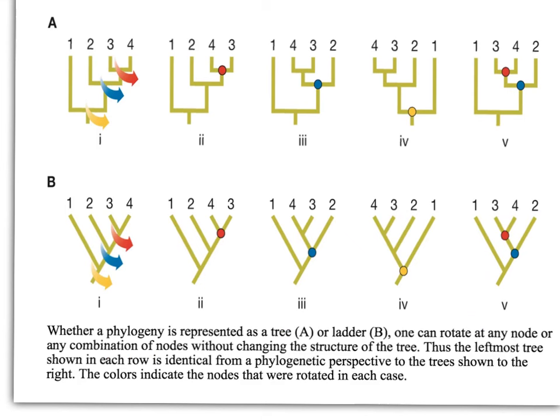Whether a phylogeny is represented as a tree or ladder, one can rotate at any node or any combination of nodes without changing the structure of the tree. Thus, the leftmost tree shown in each row is identical from a phylogenetic perspective to the tree shown to the right. The colors indicate the nodes that were rotated in each case. For example, from image 1 to image 2, the node that gives rise to 3 and 4 has been rotated. This rotation leaves the phylogeny unchanged.